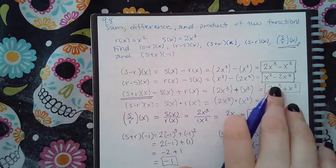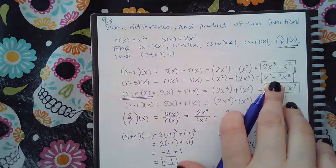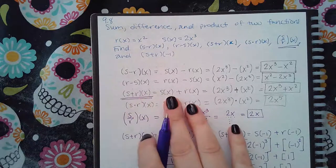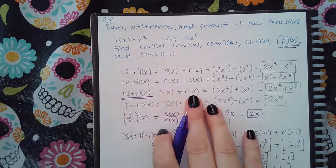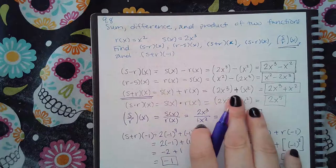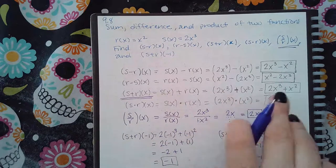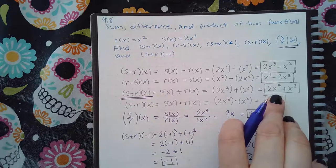Then do (s + r)(x), which means s(x) plus r(x), which means 2x cubed plus x squared. Again, try to simplify that as much as possible, but since they're not like terms, this is as far as it will go.